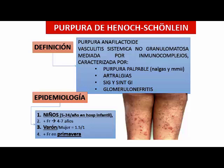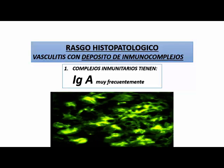Esta púrpura de Schönlein-Henoch generalmente es una púrpura vista por cuadro agudo en las emergencias, o vista generalmente por nefrólogos pediatras. Es una púrpura anafilactoide que produce una glomerulonefritis muy típica. También llamada púrpura palpable, artralgias. Generalmente son pacientes que hacen cuadro gastrointestinal importante previo, diarrea, cuadros asociados a diarreas. Son por inmunocomplejos, fundamentalmente IgA. El rasgo histopatológico básico es depósito de inmunocomplejos mediados por IgA.